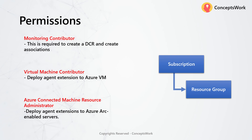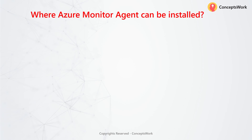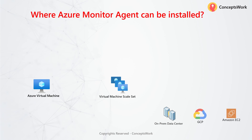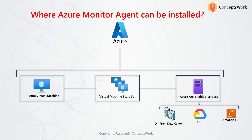Let's talk about where exactly Azure Monitor Agent can be installed. It can be installed on Azure VM, on Virtual Machine Scale Sets, or on any machine that exists across any platform — it can be your on-prem data center or some other cloud like GCP or Amazon — because you will be using Azure Arc to get these machines onboarded to Azure as an Azure resource.